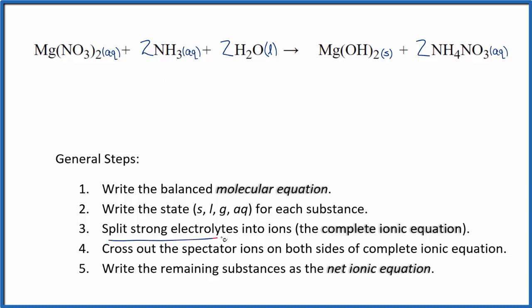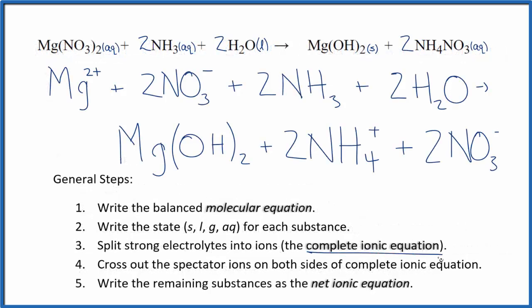Now we can split the strong electrolytes into their ions for the complete ionic equation. Remember ammonia is a weak electrolyte. That looks like this. So once we have that complete ionic equation, we can split spectators apart.